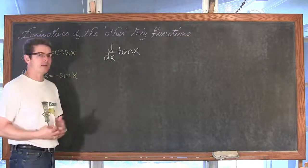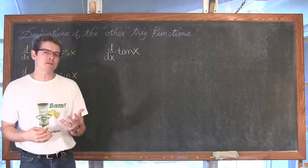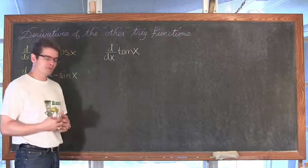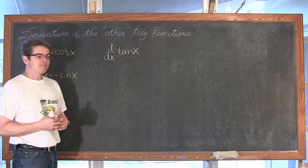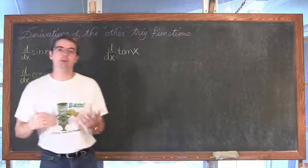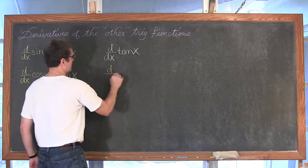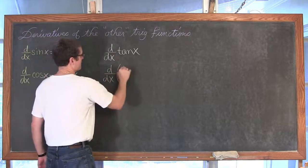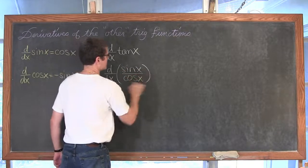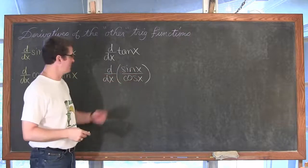Maybe a couple of months down the road we are doing a lot of other things and we get to a problem and we are just not quite sure — was that secant squared or was it cosecant squared or something else? Kind of like when we did our trig proofs in pre-calculus, sometimes we just need to go back to the parent functions. Our sine and cosine functions basically build the other four trig functions. So I can rewrite this as the derivative with respect to x of sine of x over cosine of x.